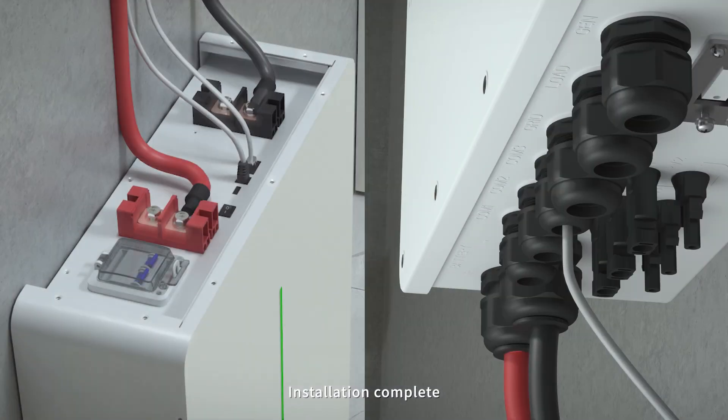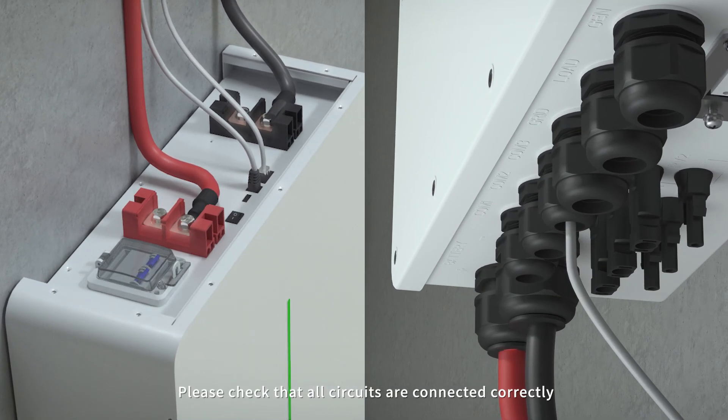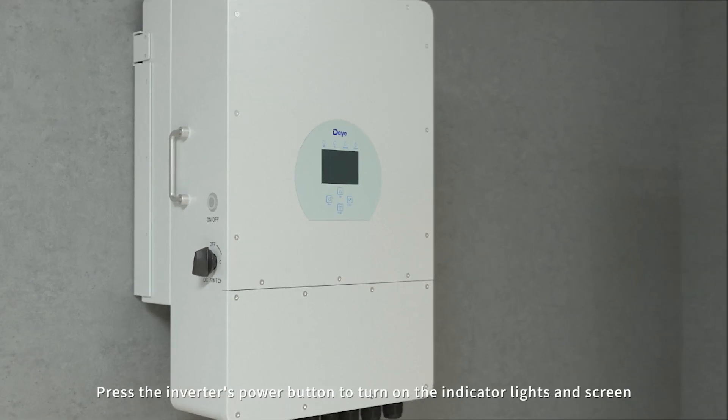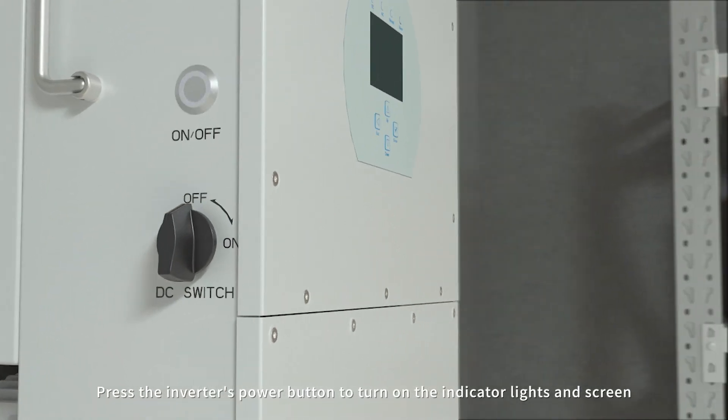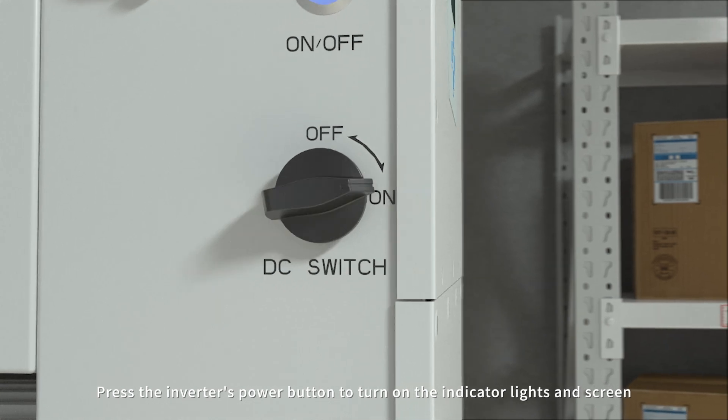The inverter's product activation: Installation complete. Please check that all circuits are connected correctly. Press the inverter's power button to turn on the indicator lights and screen.